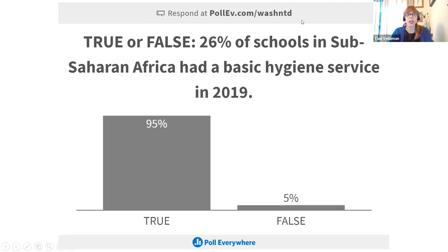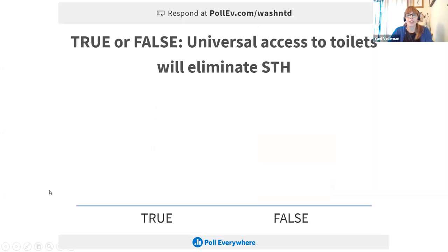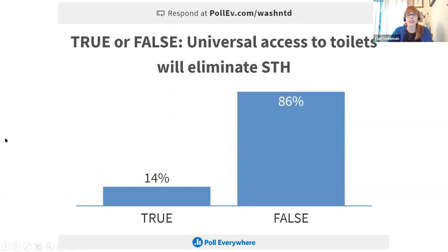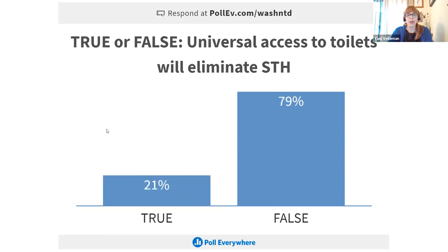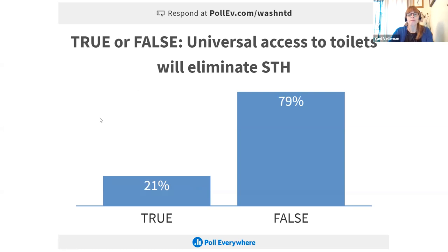The next question: is it true or false that universal access to toilets will eliminate soil-transmitted helminths — so hookworm, ascaris and trichuris? Most of you got it right. This is a trick question because universal access to safely managed sanitation systems will probably help eliminate STH, but access to toilets is only the first step in the chain of safely managed sanitation services.